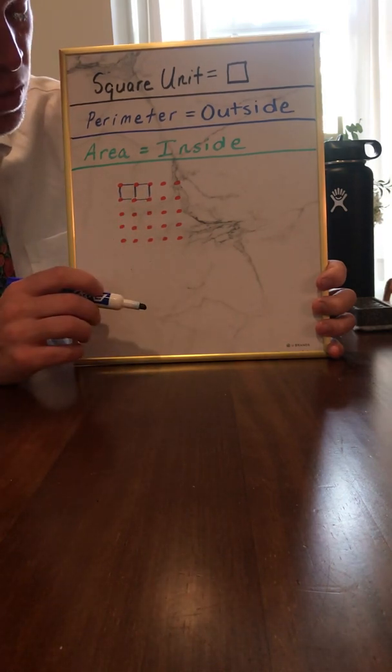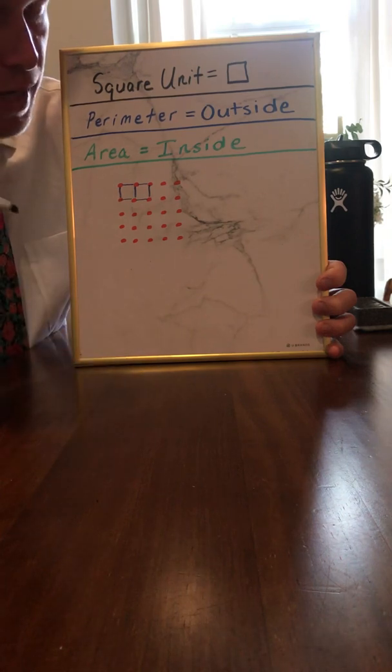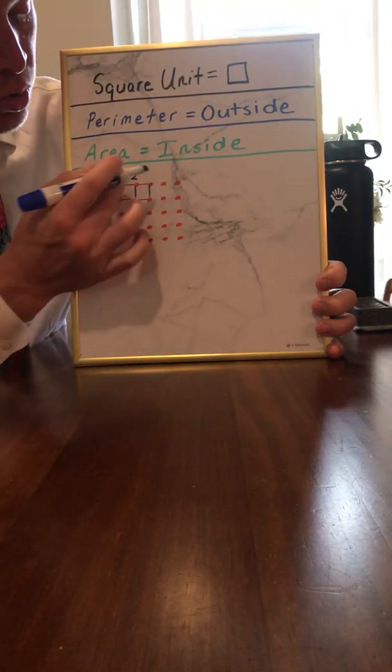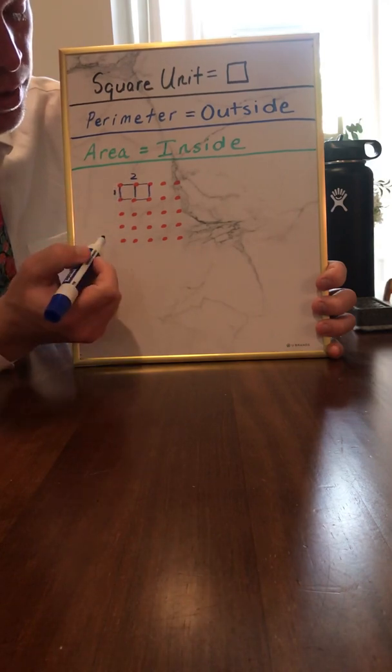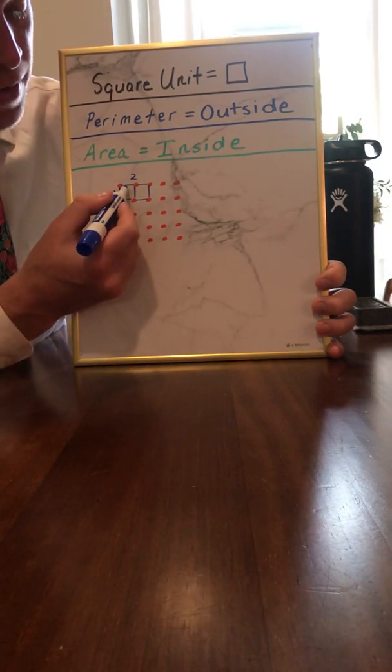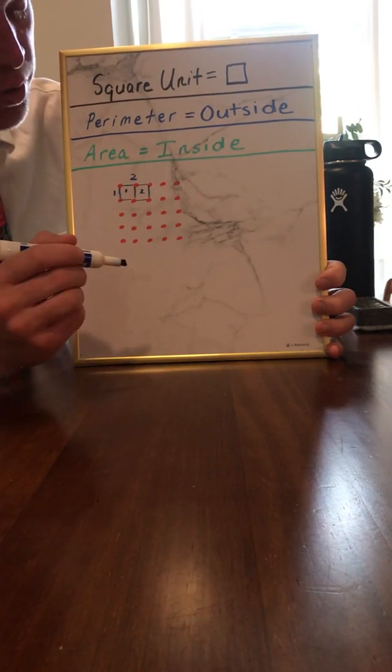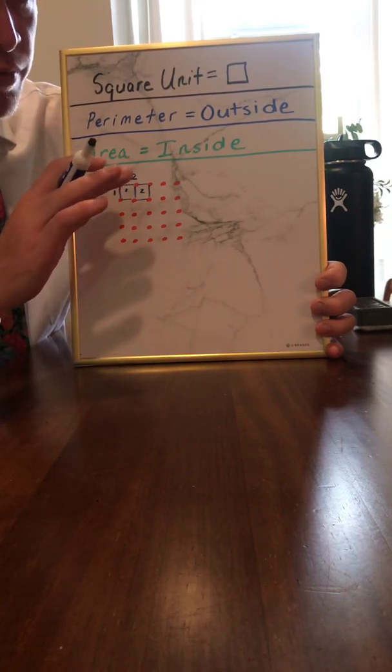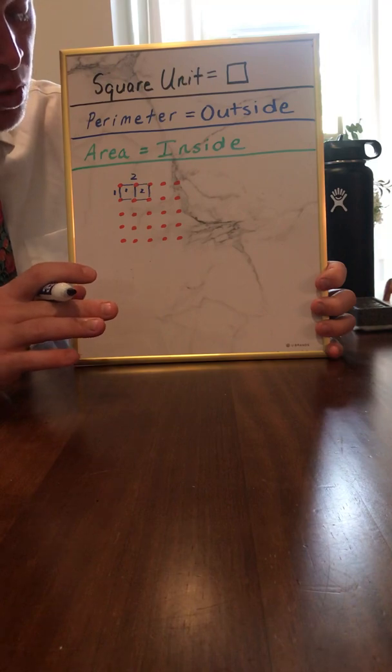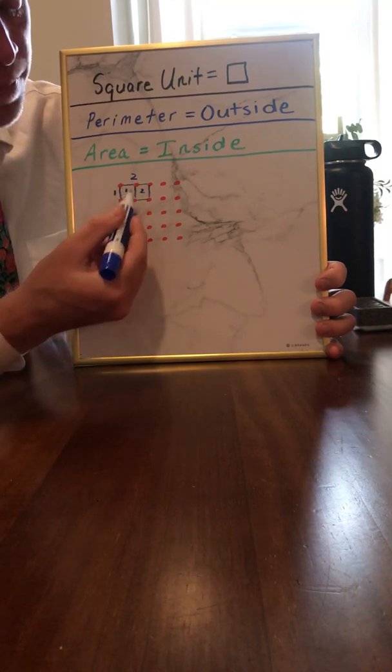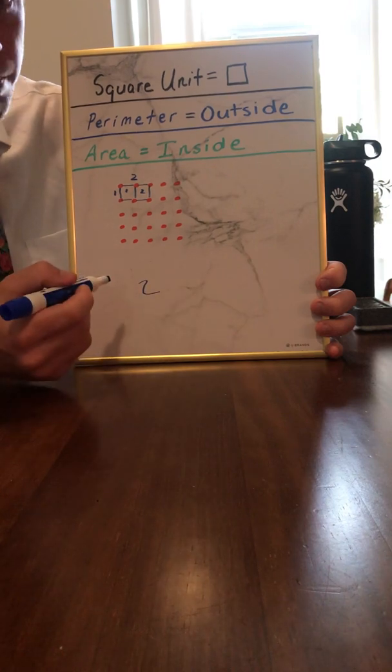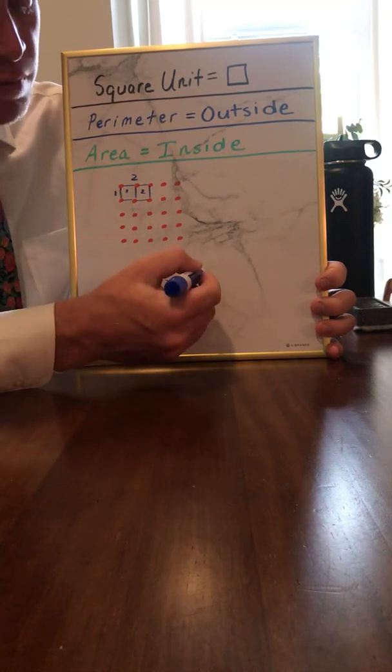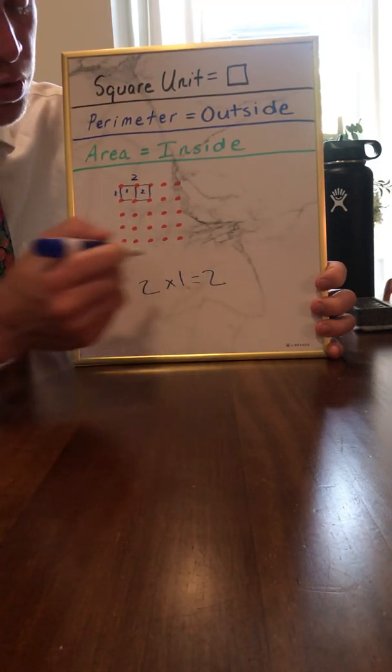So the area, you have two across the top and then just one square going down. Now you could easily just count the squares right? One, two. The area being two square units. But what I'm going to show you right now is in my opinion an efficient way to find an area of all types of different plane shapes. Okay, what you can do is you can take the length which is two and you can multiply it by the width. So times the width. And then two times one is an easy multiplication fact which is two, two square units, two here.